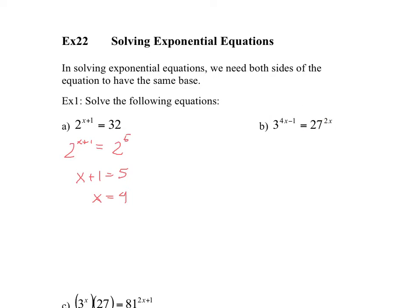Next example, we have base of 3 here to the power of 4x minus 1, and base of 27 to the power of 2x. So what we have to do is change the 27 to a base of 3. Fairly easy to do, so 3 to the power of 4x minus 1 equals 3 to the power of 3, all that to the power of 2x.